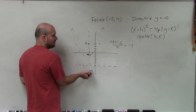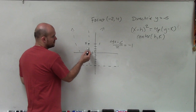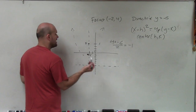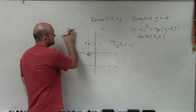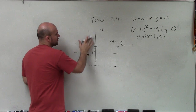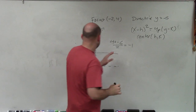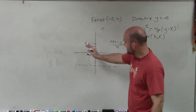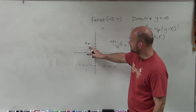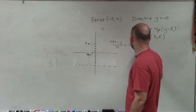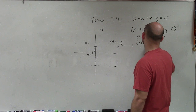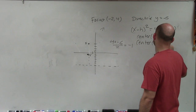Let's verify — is that equidistant to the focus and directrix? 1, 2, 3, 4, 5 — yes, 5 units each way. It works. So the next thing important for writing the equation: we know the vertex y-coordinate is negative 1, and it must align on the axis of symmetry with the focus, so it shares the same x-coordinate of negative 2. Therefore my vertex is negative 2 comma negative 1.